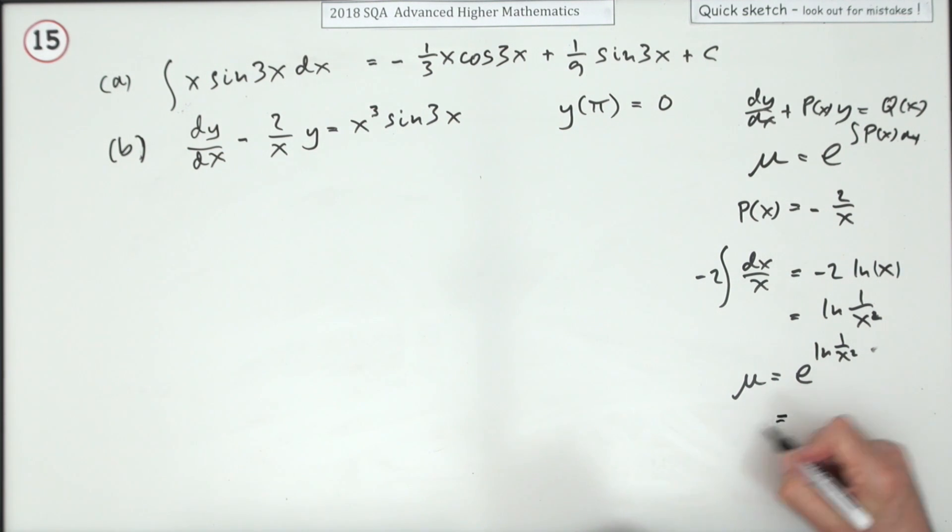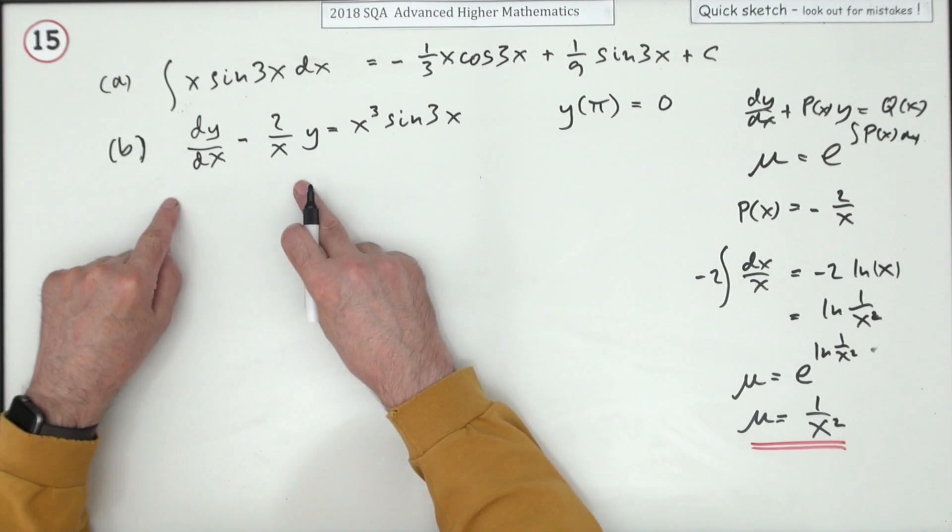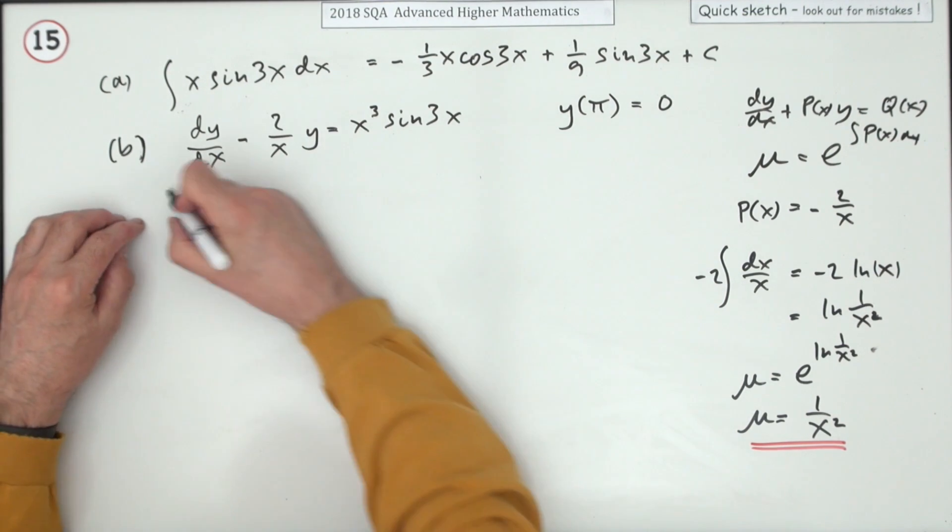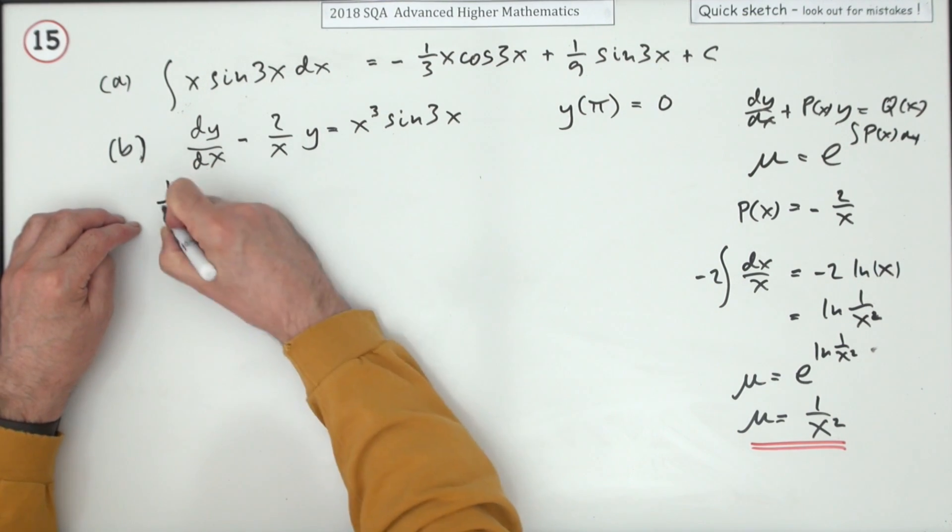So that reduces down to 1 upon x squared. Usually just pop straight in with 1 over x squared y equals integral of that. I think we'll just write down what happens next.